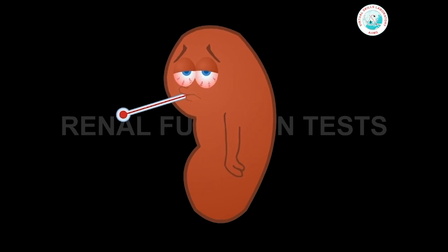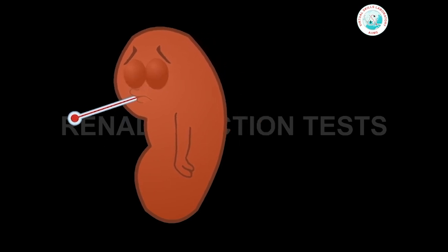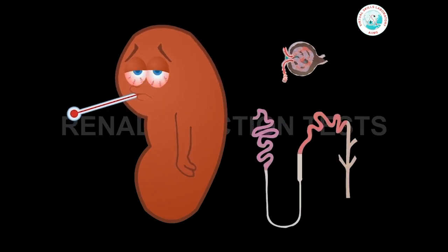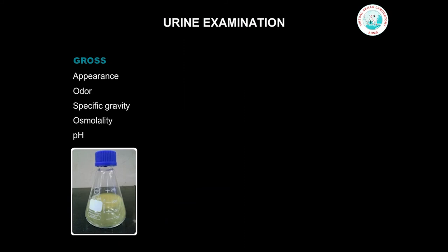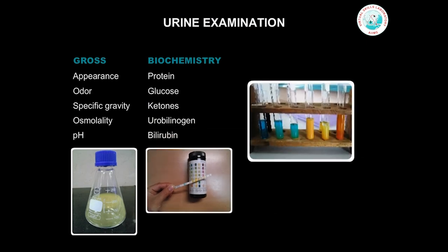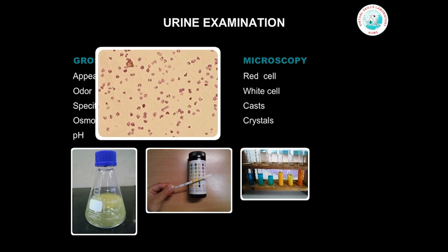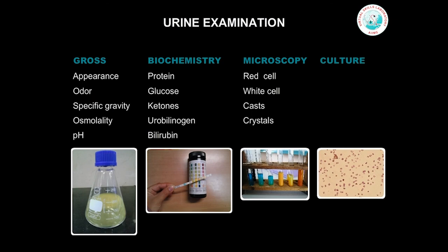So far we have talked about the normal. Now, what to do if something goes wrong? Many diseases affect renal function. In some, there is selective impairment of glomerular function or tubular function, while in some, several functions are affected. Renal function tests are performed to confirm the diagnosis of renal disease, to monitor disease progress and to monitor response to treatment. Investigation of kidney diseases begins with urine examination — which will be discussed in a separate tutorial — including the appearance, odor, specific gravity, osmolality, pH, presence of proteins, glucose, ketones, urobilinogen and bilirubin, which is tested using commercially available disposable dipsticks or conventional methods, along with microscopy to see the presence of red cells, white cells, casts or crystals, and culture for presence of any microorganisms.